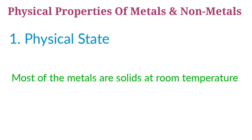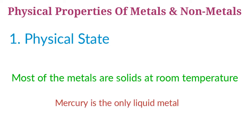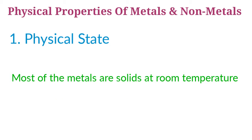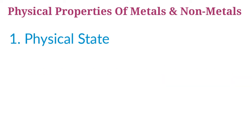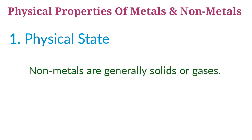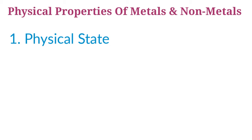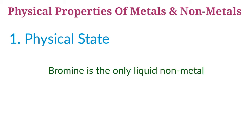First property: physical state. Most metals are solid at room temperature. Mercury is the only metal known to occur in liquid state in nature. No metal exists in gaseous state. Non-metals are generally solids or gases. Non-metals like sulfur, phosphorus, and carbon are solids, while hydrogen, oxygen, and nitrogen are gases. Bromine is the only non-metal which exists as liquid at room temperature.